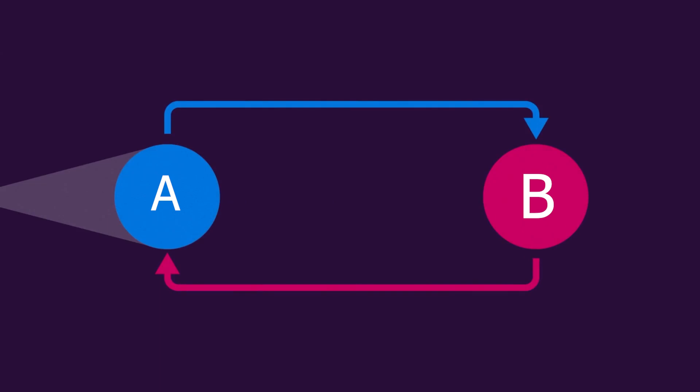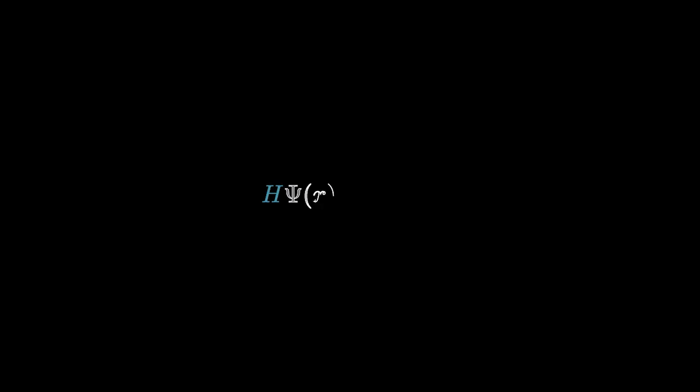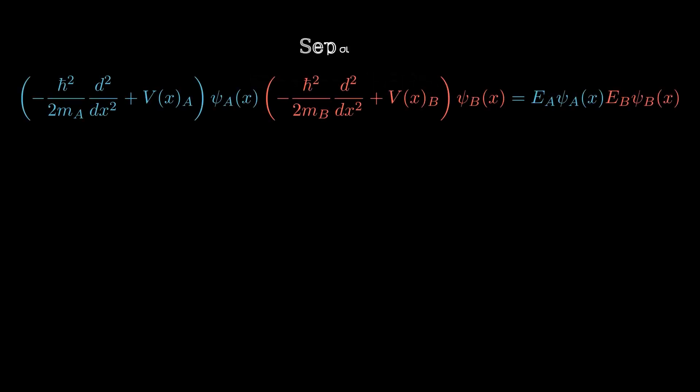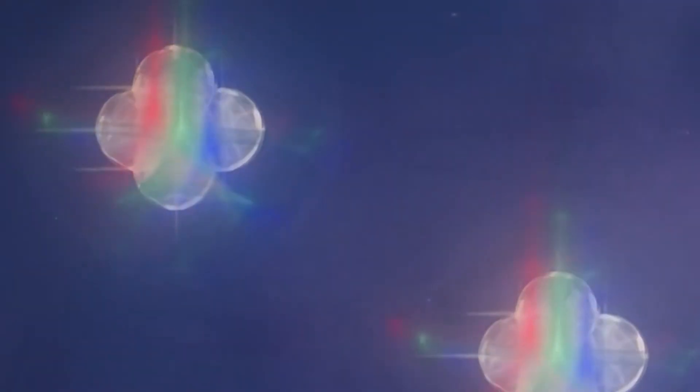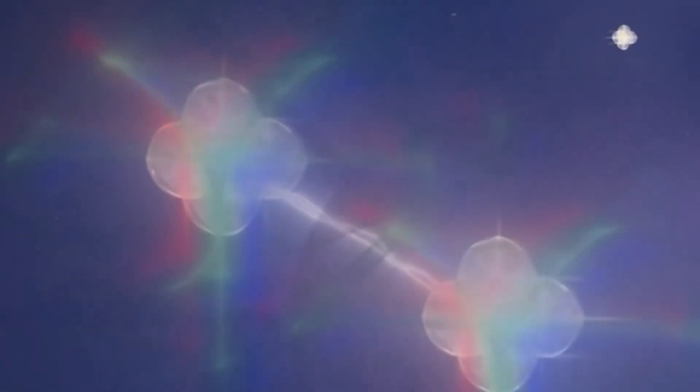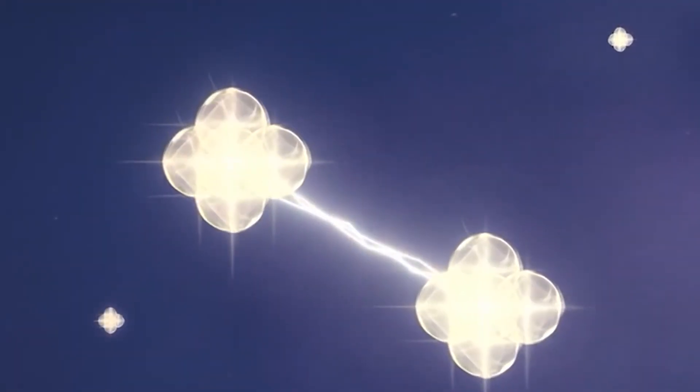When dealing with the quantum state of multiple systems, we can still solve the Schrodinger equation, but there is a distinction based on separability. When the Schrodinger equation is separable, we can separate the contributions from systems A and B into their own mathematical terms and then solve them separately. In a non-separable system, we cannot do this because there is some mathematical term that we can't factor out. Separable systems typically exhibit no entanglement, while non-separable ones may demonstrate varying degrees of entanglement.